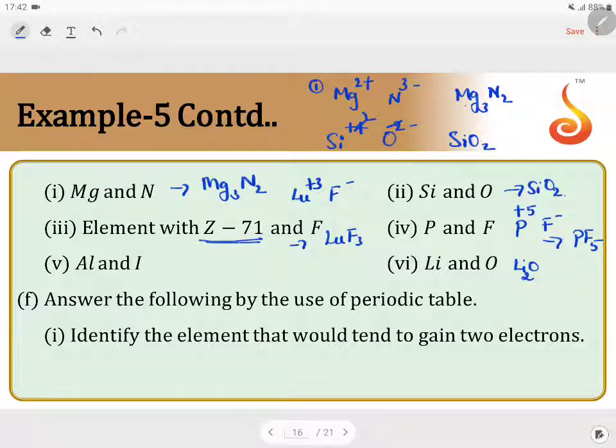Lithium and oxygen. Li is plus. Oxygen is O2-. Therefore, the formula should have been Li2O. Then, Aluminium and iodine. Aluminium valence is plus 3. And here it is minus. Therefore, you get AlI3. Aluminium iodide, triiodide. Lutetium fluoride, trifluoride. Silicon dioxide, phosphorus pentafluoride. Lithium oxide.